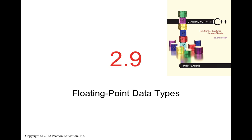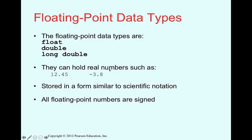In the next section we discuss floating point data types — types that deal with decimal numbers. We have three: float, double, and long double. They store numbers with a decimal point, like 12.45 or -3.8. All floating point types are signed, so unlike integers, we don't have unsigned float or unsigned double.